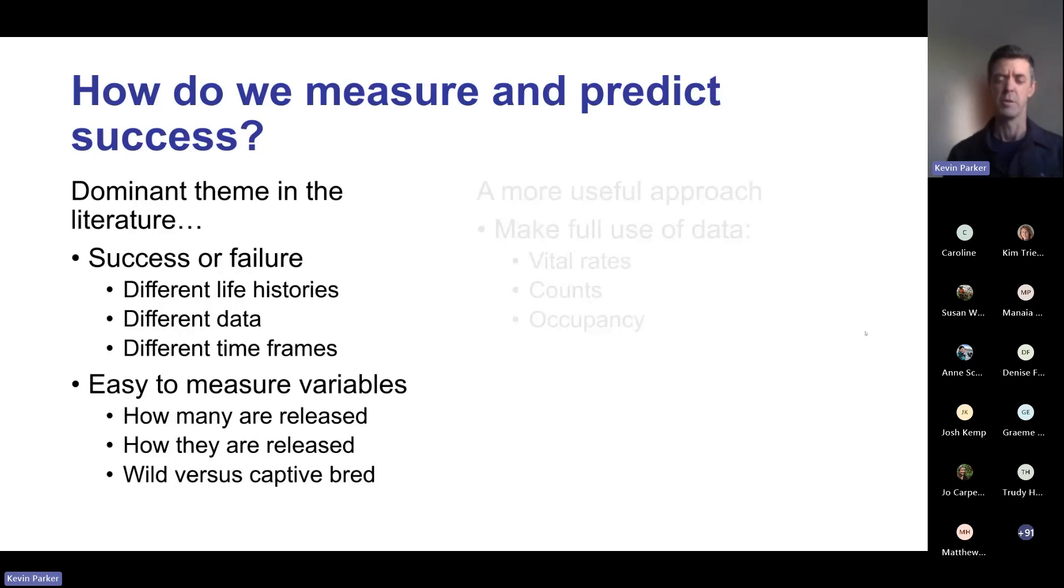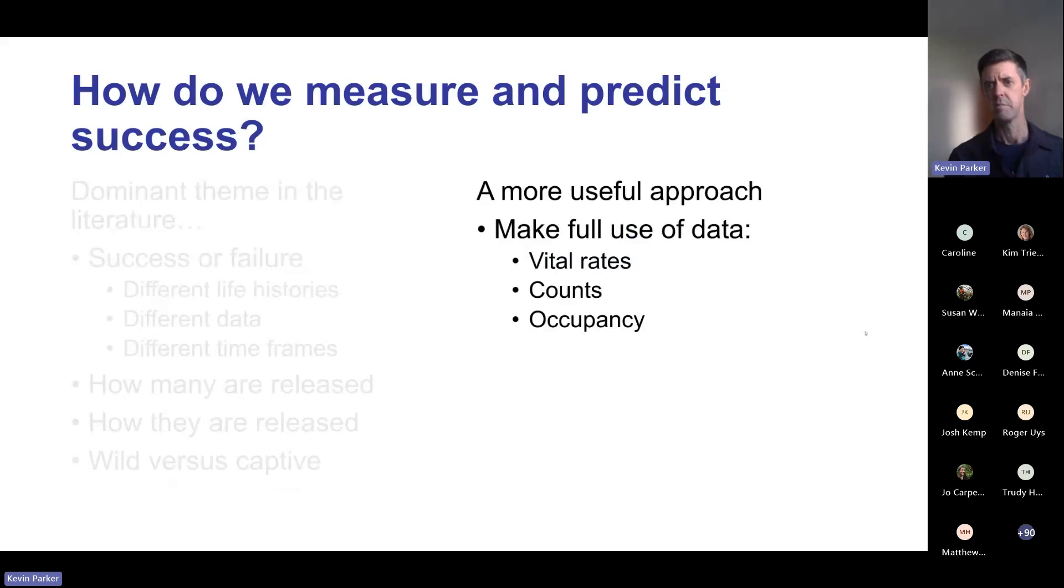Another feature is that most meta-analyses have typically measured easy to measure variables: how many animals are released, how they are released - delayed versus immediate release protocol - and whether the animals were wild or captive reared. Now these variables are undoubtedly important, but they're not the most important things when it comes to determining translocation success.